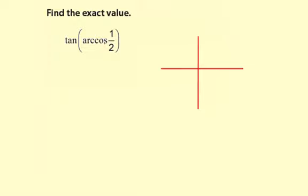Now the range of the arc cosine is between 0 and pi. And we're positive here, so we're going to be in quadrant 1. So it'll be something like that.